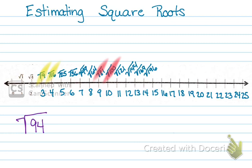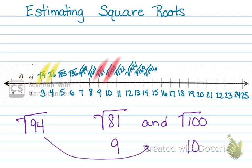So this is between the square root of 81 and the square root of 100. Perfect square of 81 is 9 and 100 is 10. So our number lies somewhere in between here, 9 point something.